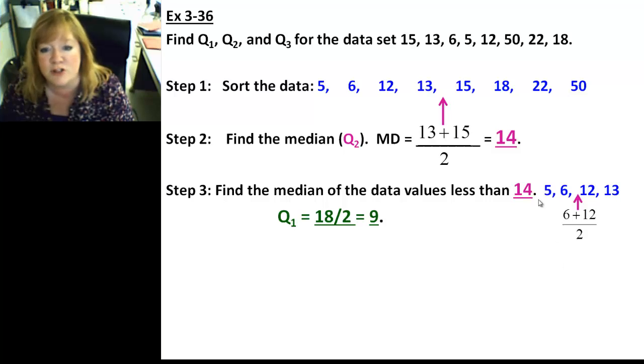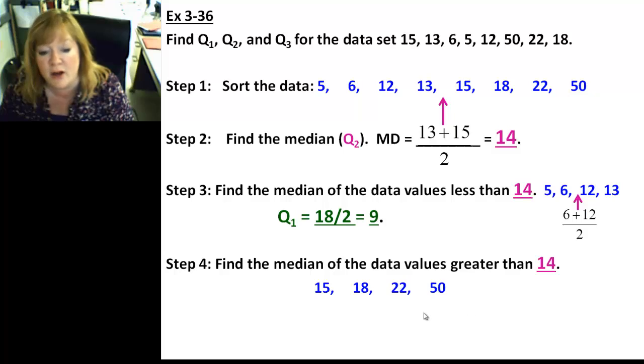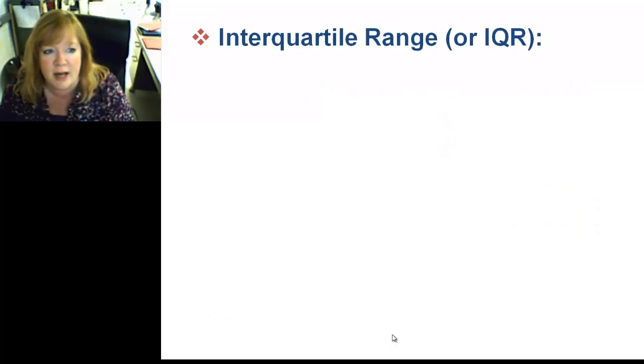Now, all we need is Q3. So, for Q3, we're going to be looking at the values that are greater than 14. That's 15, 18, 22, and 50. So, if we take those, we want the ones that are in between 18 and 22, right in the middle there. So, you take 18 plus 22, divide by 2. That's 40 over 2. Or, since we're from St. Louis, 40 over 2, and you'd end up with 20. So, there's your Q3. What could be easier? Not much.